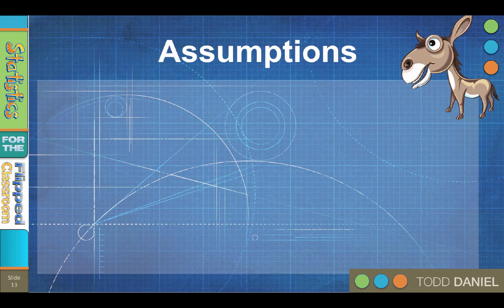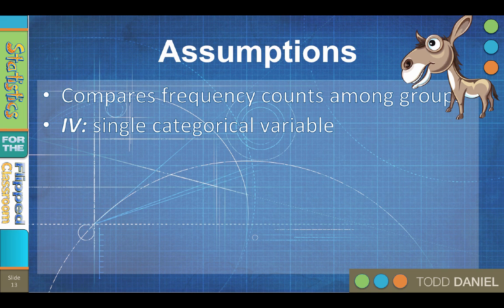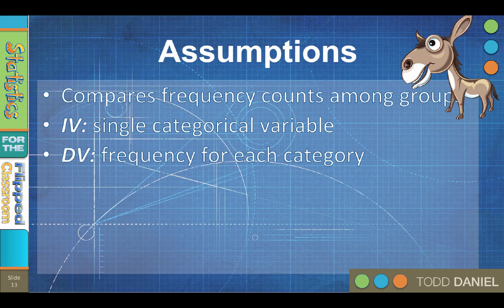Here are the assumptions for using chi-square tests. First, the chi-square goodness-of-fit test can compare frequencies of counts among categories or groups, answering the research question: are the data a good fit to a random distribution or perhaps a hypothesized distribution? The independent variable is a single categorical variable with at least two groups or categories. Chi-square can be done with ordinal variables, but the test will treat them as though they were nominal. The dependent variable is the frequency of scores in each independent variable category.